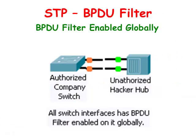The BPDU Filter feature enables you to filter BPDUs on the interface port of your switch. This is handy for ports that you know should only be connected to user devices. It prevents unauthorized switches that are mistakenly connected to a BPDU-protected switch from creating layer 2 switching loops.